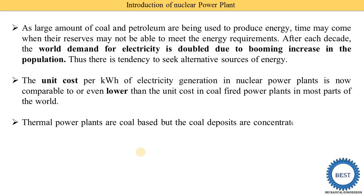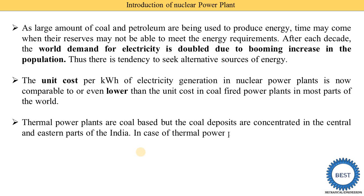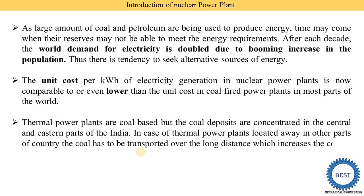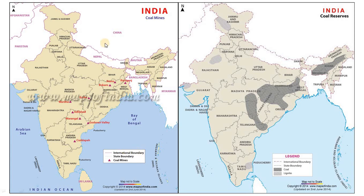Thermal power plants are coal-based, but the coal deposits are concentrated in the central and eastern parts of India. So in the case of thermal power plants located in other parts of the country, the coal has to be transferred over a long distance, which increases the cost of power generation. Here you can see a map of coal mines in India — these are located in the eastern and central parts, with various coal mines and reserves available in those regions.